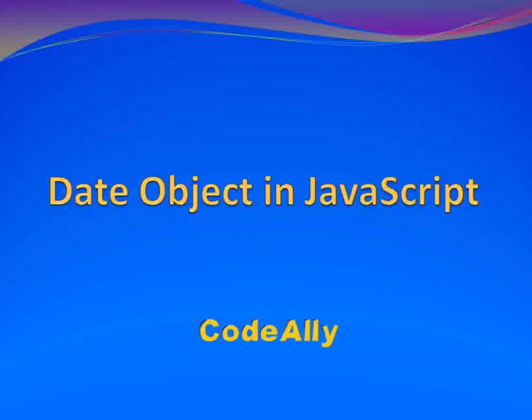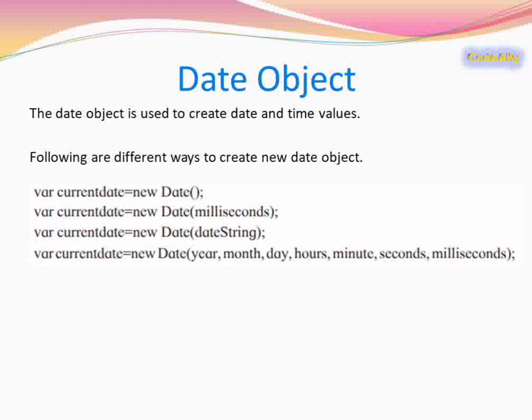In this video we are going to learn about the Date object in JavaScript. The Date object is used to create date and time values. To create a new Date, we write the var keyword, then the variable name, equals new Date with a capital D. In the round brackets we pass the date. If we don't pass a date it takes the current date, and if we give a date it considers that particular date. The date can be given in the format: year, month, day, hours, minutes, seconds, and milliseconds.